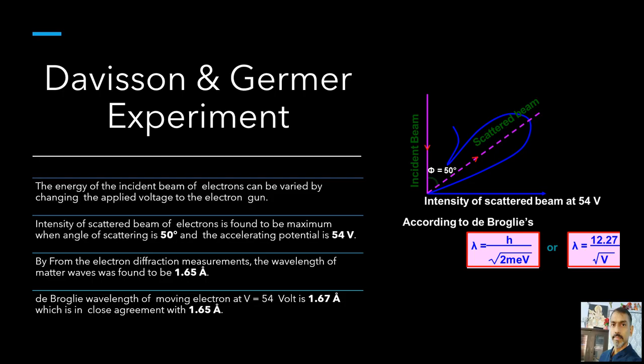The experiment was performed by varying the accelerating voltage from 44 volt to 68 volt. It was noticed that a strong peak appeared in the intensity of the scattered electron for an accelerating voltage of 54 volt at a scattering angle of 50 degree. The appearance of the peak in a particular direction is due to the constructive interference of electrons scattered from different layers of the regularly spaced atoms of the crystals.